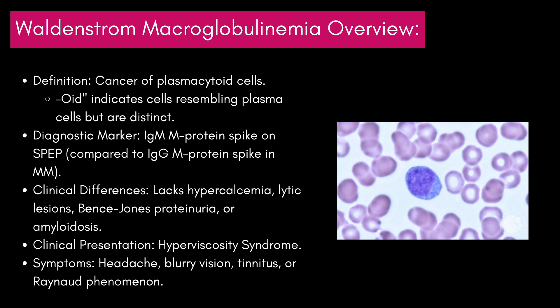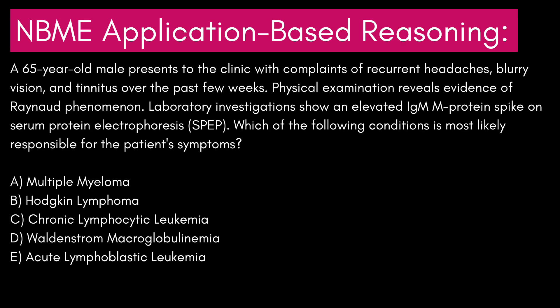Now that we have covered all of the content, let's go ahead and take a look at some questions to review the knowledge you have gained so far. A 65-year-old male presents to the clinic with complaints of recurrent headaches, blurry vision, and tinnitus over the past few weeks. Physical examination reveals evidence of Raynaud phenomenon. Laboratory investigations show an elevated IgM M-protein spike on serum protein electrophoresis, SPEP. Which of the following conditions is most likely responsible for the patient's symptoms?